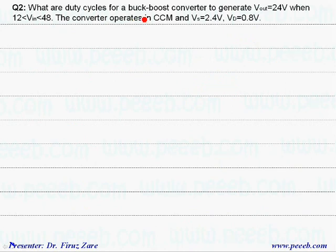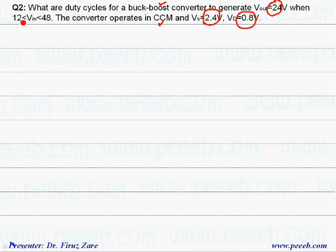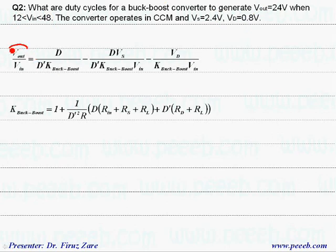In this next example, we have a buck-boost converter operating in continuous conduction mode. The voltage across the switch is 2.4 volts and the voltage across the diode is 0.8 volts. The output voltage must be kept at 24 volts, and the question is: if the input voltage fluctuates between 12 and 48 volts, what are the duty cycles required?